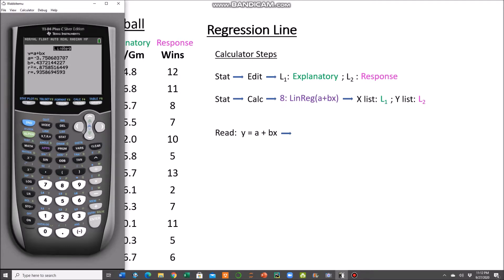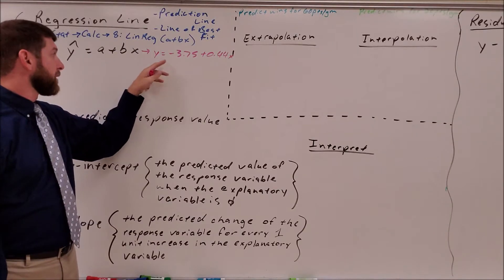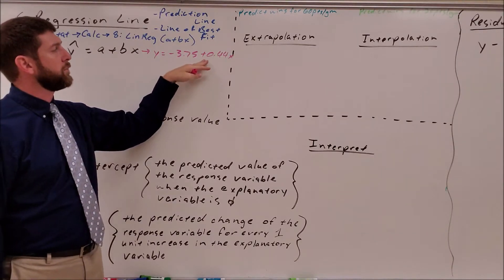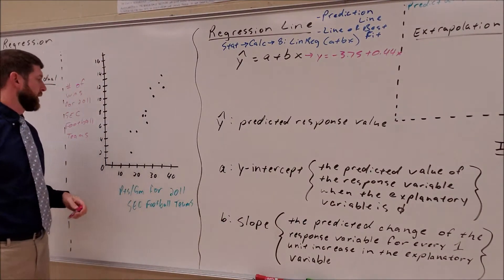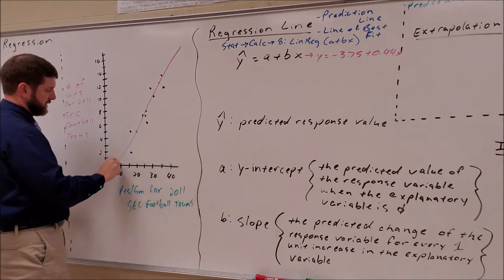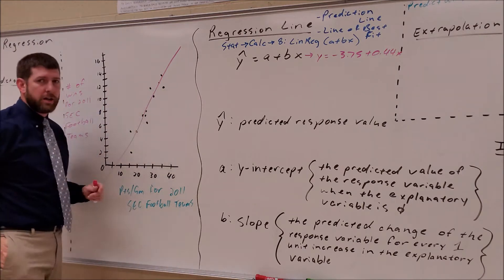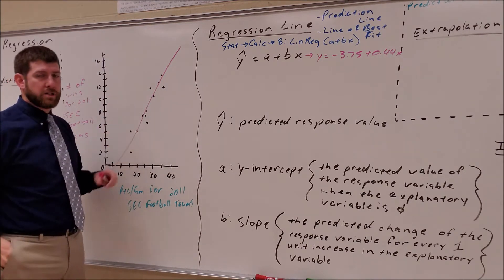So Y equals A plus BX gives us the equation Y equals negative 3.75 plus 0.44X. Let's talk about what each of these numbers means. Graphically, plugging in the slope and y-intercept gives a line running right through our data set most closely. It doesn't hit every single point — this is just an approximation line — so predictions using it should be close to what was actually observed.